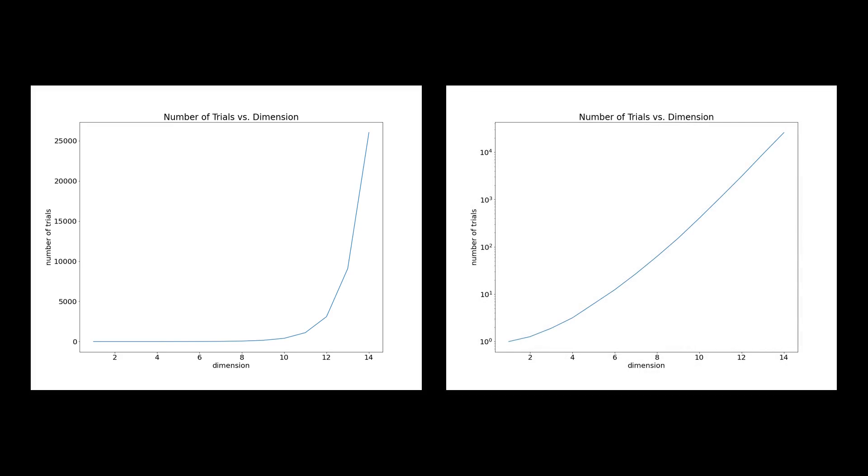I selected 3,141 points for dimensions 1 to 14 and recorded the average number of trials. As you can see, as the dimension increases, the number of trials increases very rapidly. In just 14 dimensions, each point on average already requires more than 10,000 trials. Even when we switch to log scale for the number of trials, the graph still appears to be concave up, indicating that the number of trials may grow faster than exponentially with dimension.